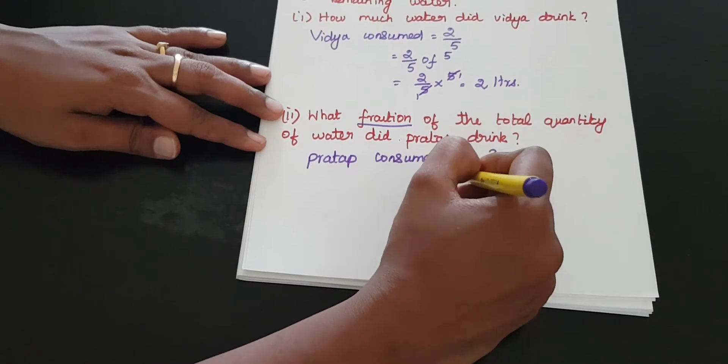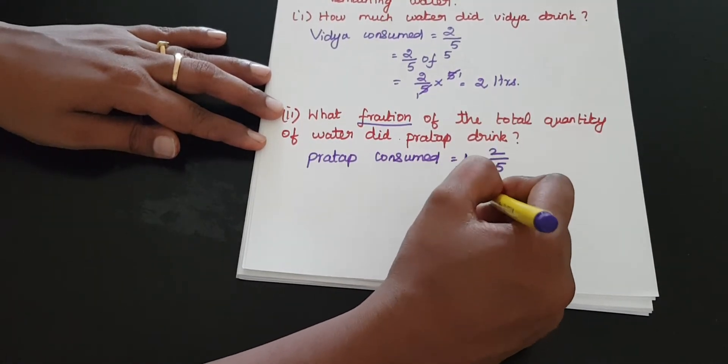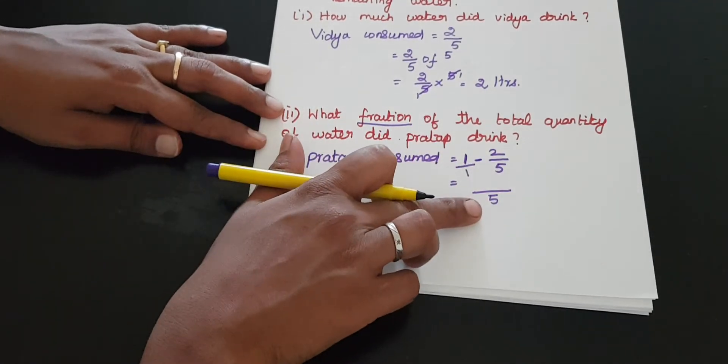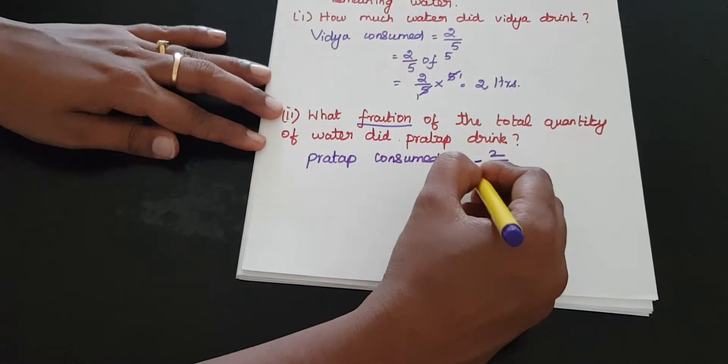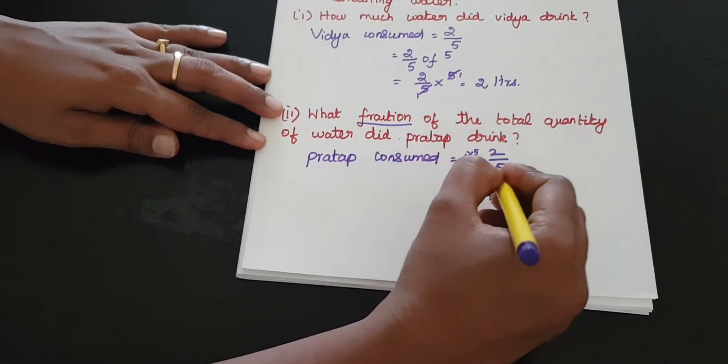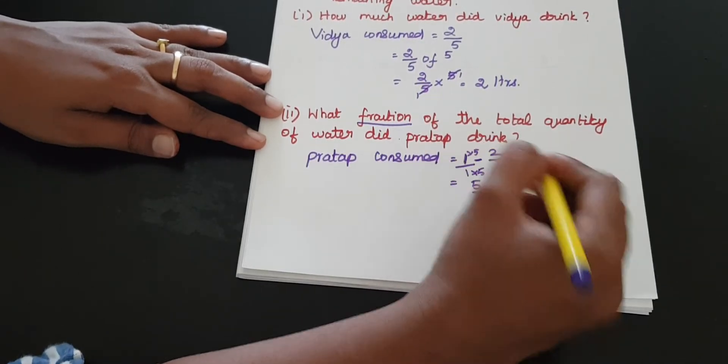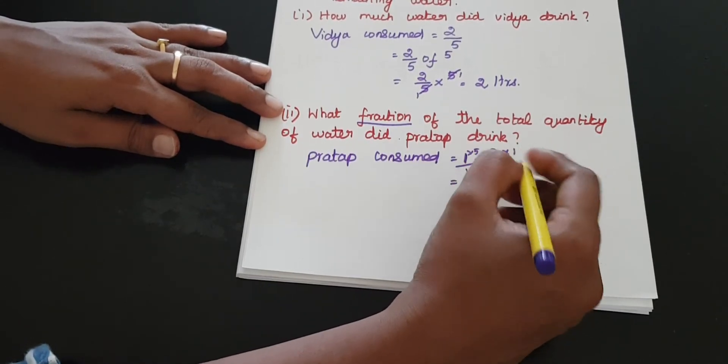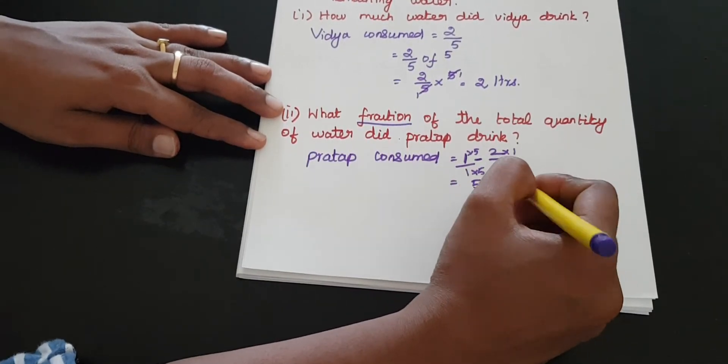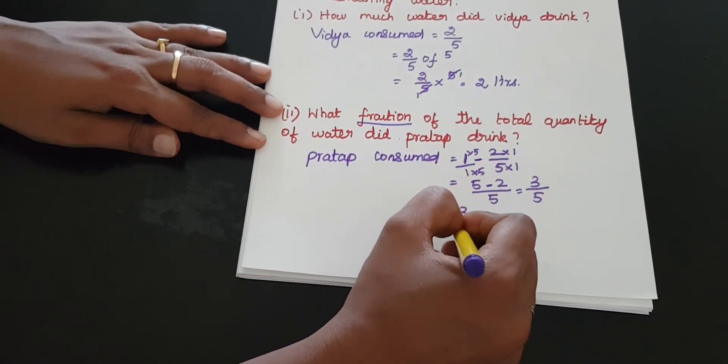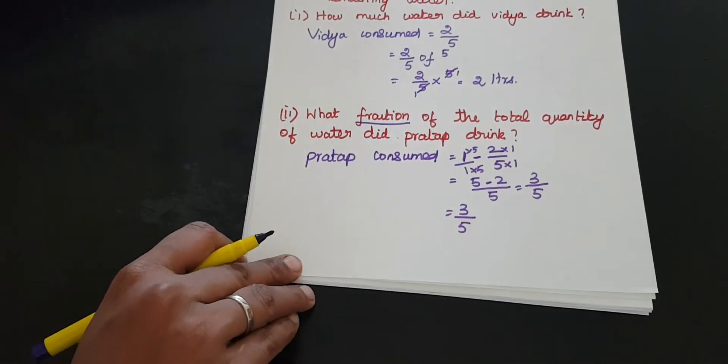So 1, that's 5 by 5, minus 2 by 5. 5 minus 2 equals 3. 3 by 5. 3 by 5 is the answer.